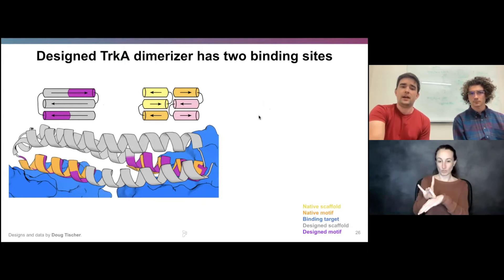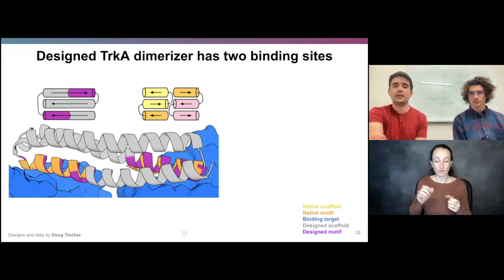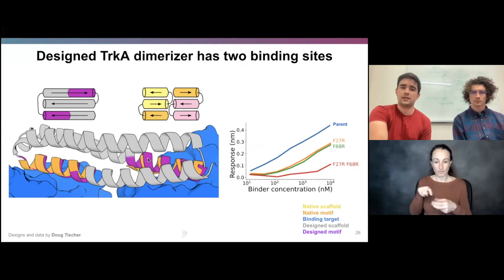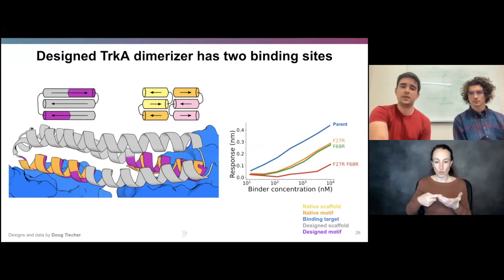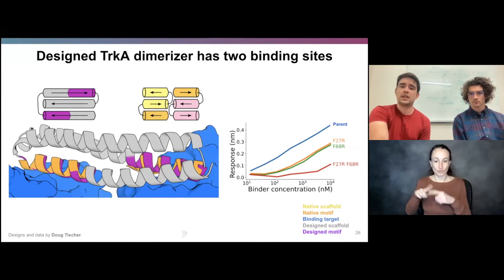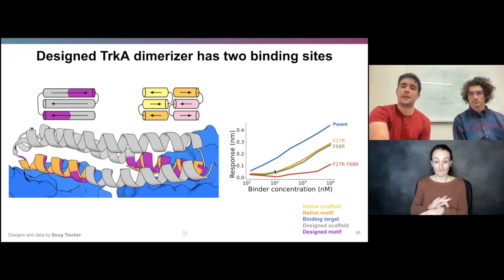To test the functionality, we tested the ability to bind purified TrkA by biolayer interferometry. Both binding sites are able to bind TrkA. The parent shows a strong dose-dependent ability to bind TrkA. A double loss-of-function mutant (one mutation in each binding site) significantly abrogates the ability to bind TrkA, whereas each single site point mutation that leaves one binding site fully functional can partially bind TrkA, confirming that each one is independently functional.